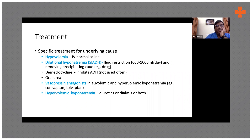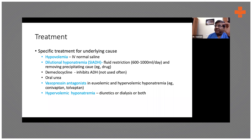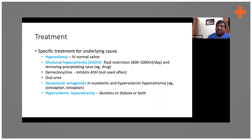Treatment again depends on the underlying cause. In a patient with hypovolemia secondary to gastroenteritis or diarrhea, you would give normal saline. In a patient with SIADH, where the problem is water retention, you would restrict fluids — ask the patient to drink only one liter of fluid the whole day. If not 1,000 ml, then at least initially 1,200 or 1,500 ml in patients with less severe hyponatremia. It also helps if they drink coconut water or ORS rather than plain water.